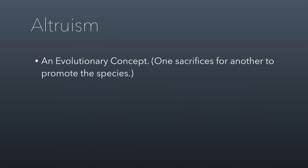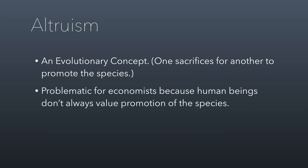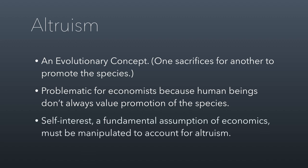Altruism is actually an evolutionary concept used by evolutionary biologists to identify survival traits — this is where one member of a species will sacrifice its own welfare to promote the survival of the species, like a mother bear protecting her cubs. But the sad truth is that human beings don't always value promotion of the species, so economists struggle with how to model altruism — how do you describe behavior that is not driven by self-interest but by the interests of others? Self-interest is a fundamental assumption of economics, and to account for altruism you have to either manipulate the way people think of self-interest or call altruism non-rational behavior altogether, and neither is ideal.